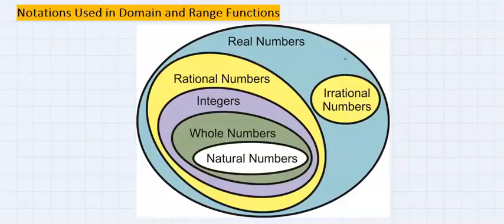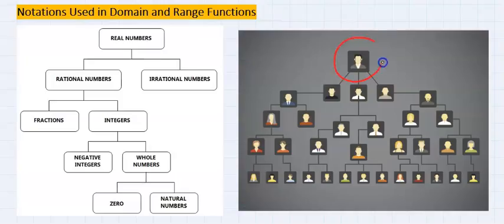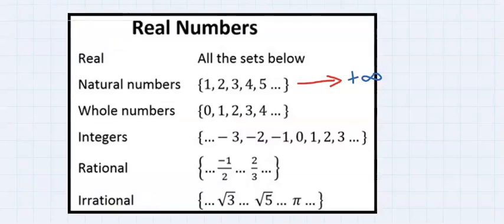Inside rational numbers are integers, whole numbers, and natural numbers. Real numbers are like the parent name of a large extended family. On the number line, from one to infinity is known as natural numbers.